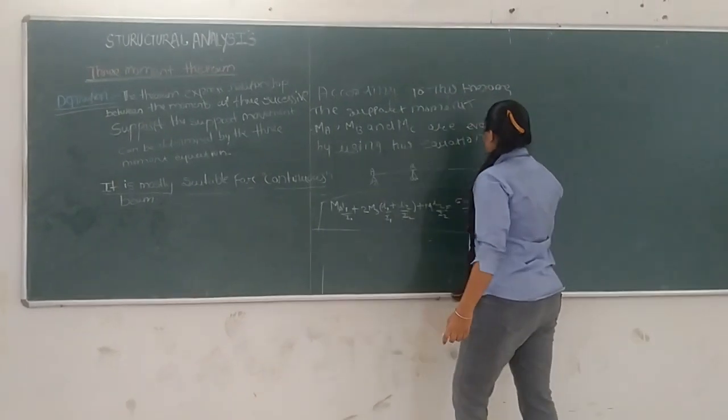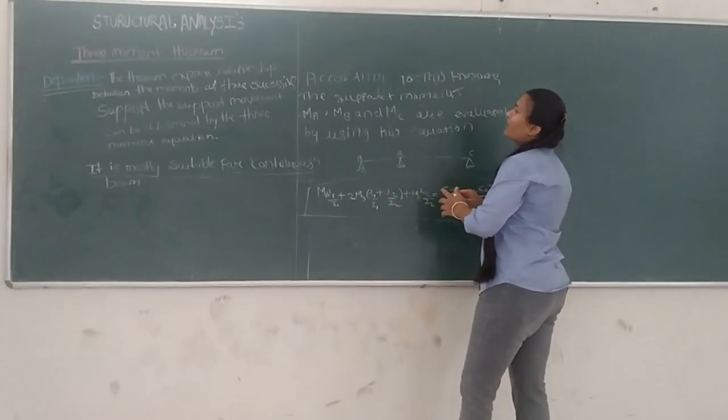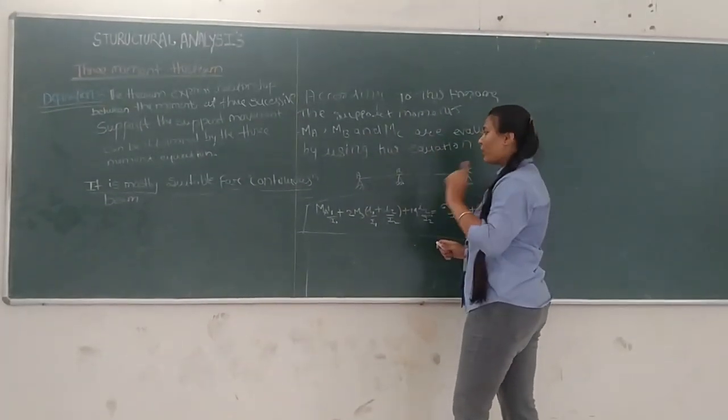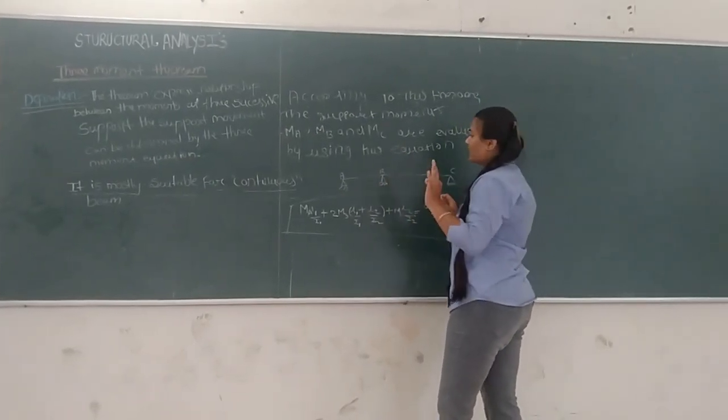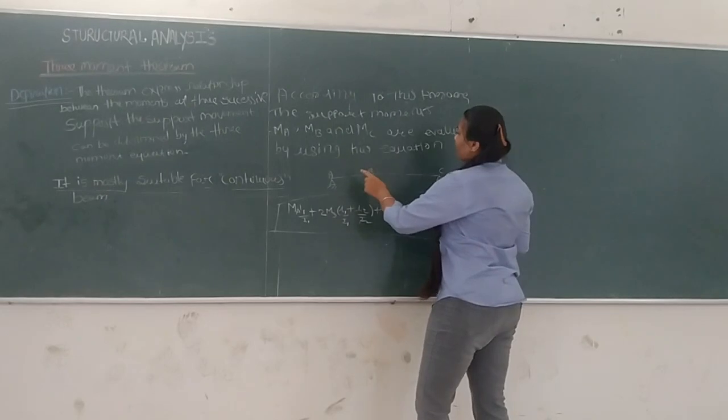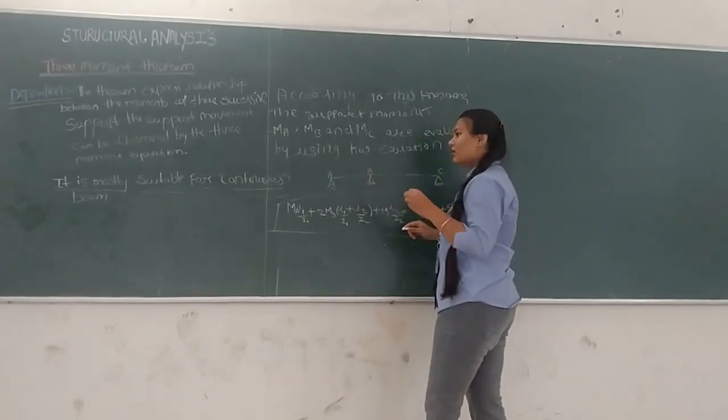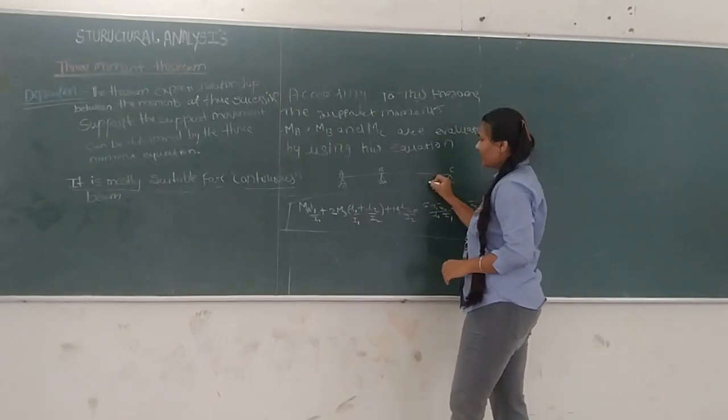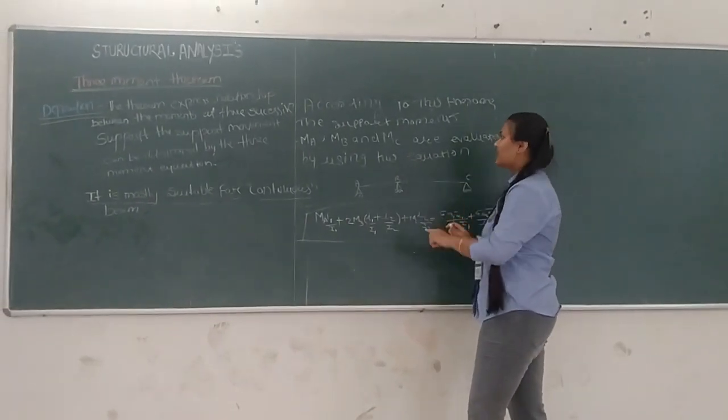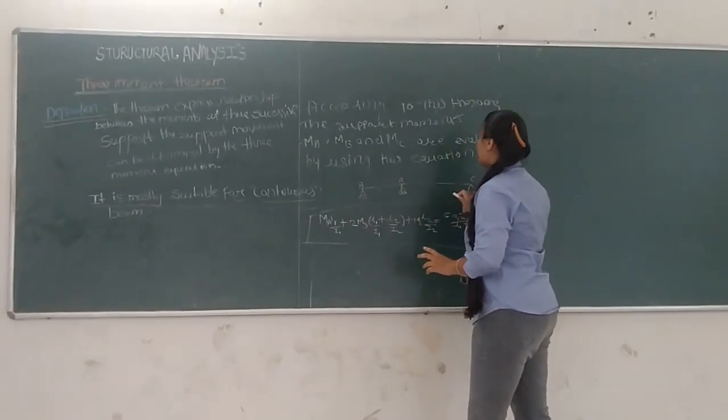This is the example of three moment theorem. In three moment theorem, it is important that only three supports are present. It does not matter if the supports are rollers or other types, the main thing is that three supports are present in the problem.